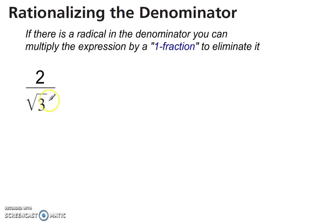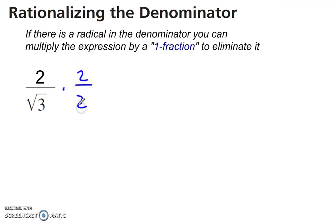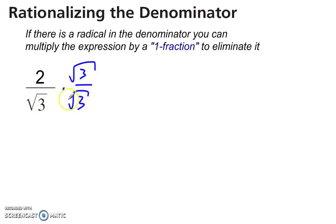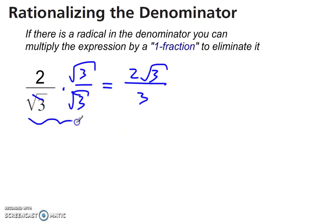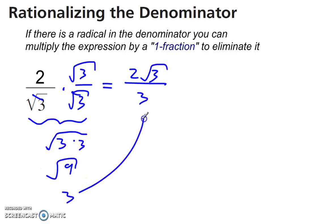Rationalizing the denominator: if you have a radical in the denominator, multiply the whole thing by 1 — meaning a fraction equal to 1, like 2 over 2. I'm going to multiply by something that cancels out this radical. If I multiply by radical 3 over radical 3, then radical 3 times radical 3 is squared, and that cancels out the square root. That gets me 2 radical 3 over 3, because radical 3 times radical 3 is square root of 9, which is 3.